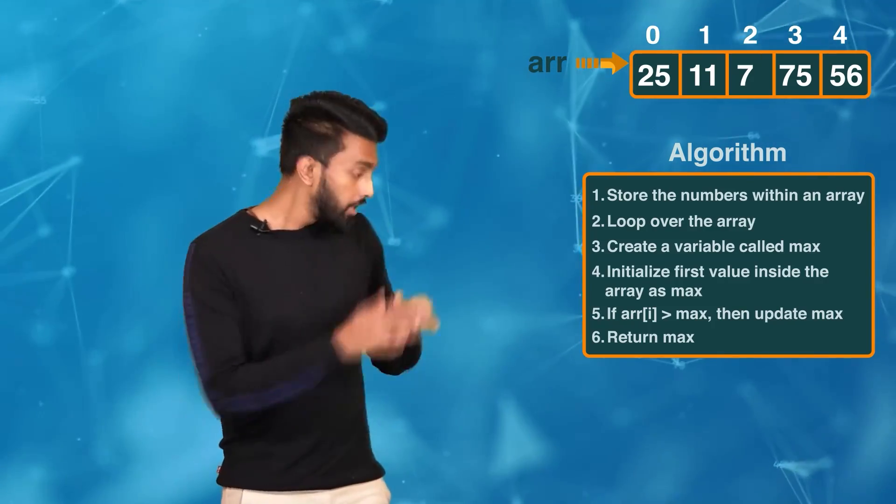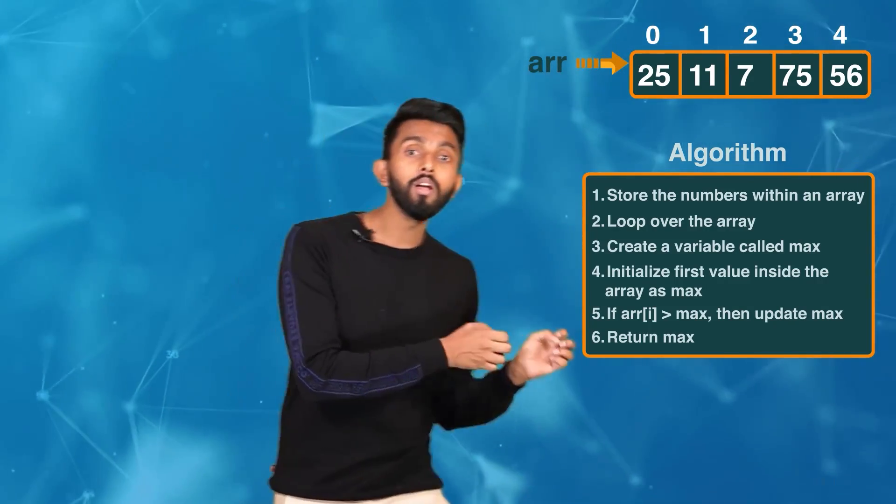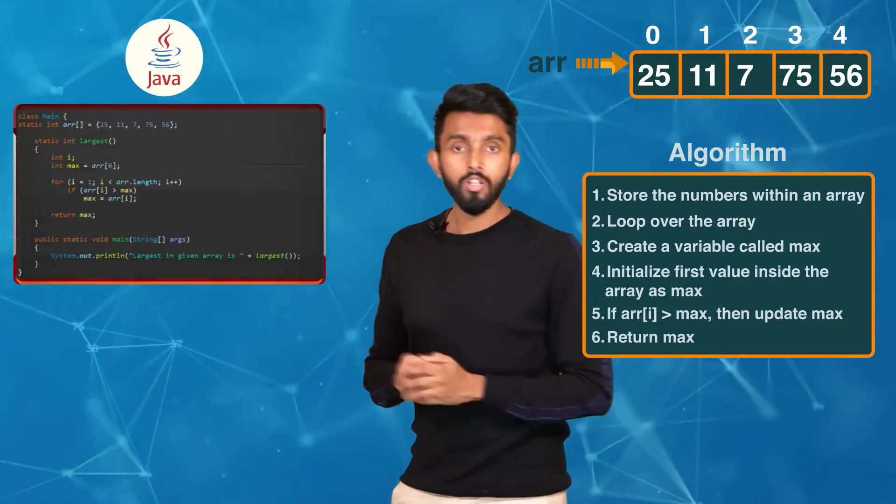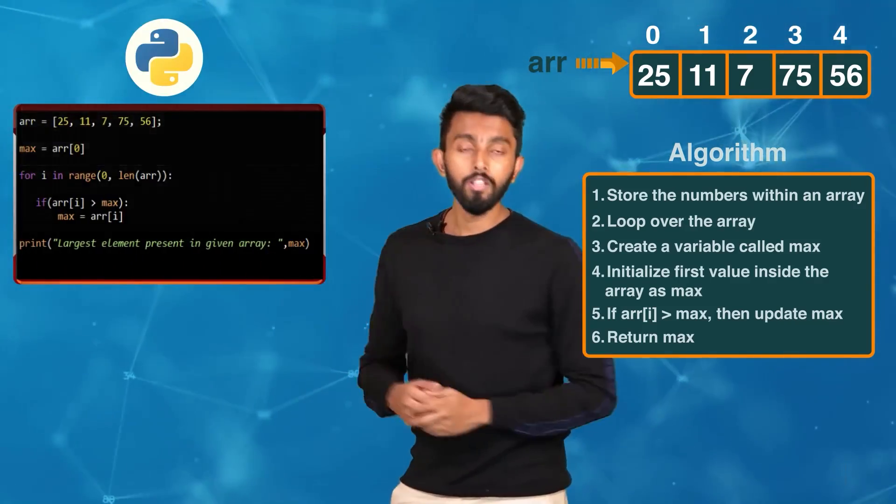That algorithm to find the largest number in an array must then be converted into code using a programming language. This is how it would look in Java; this is how it can look in Python. Building an approach towards coding is important — understanding that you're speaking to a computer and it wants you to give it a step-by-step procedure is important.